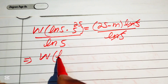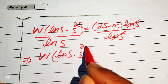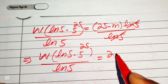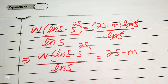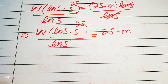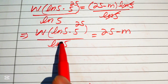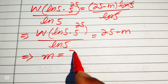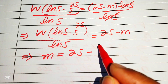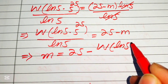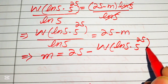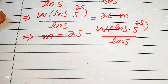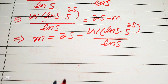After dividing by log5, we get W(log5 · 5^25) / log5 equals 25 minus m. Rearranging for m: m equals 25 minus W(log5 · 5^25) divided by log5.